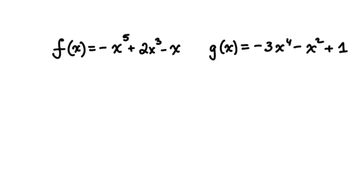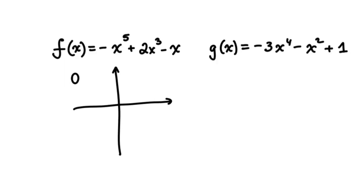When we have an odd degree function like f of x equals negative x to the power of 5 — a quintic function — it has a leading coefficient of negative 1. The end behavior of such a function will follow the end behavior of a linear function with a negative slope. So the function will extend from quadrant 2 to quadrant 4. Therefore, it will start in quadrant 2, have 4 turns, and land in quadrant 4.